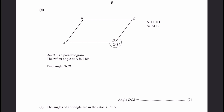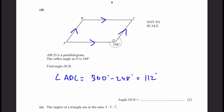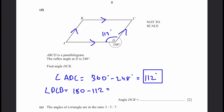Part D: ABCD is a parallelogram. The reflex angle at D is 248°. Find angle DCB. Since AD and BC are parallel, and AB and DC are parallel, angle ADC = 360° − 248° = 102°. Because the two sides are parallel, angles ADC and DCB add up to 180°, so angle DCB = 180° − 102° = 78°. Wait — 180° − 112° = 68°. That's the answer.